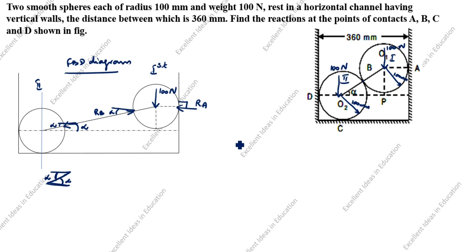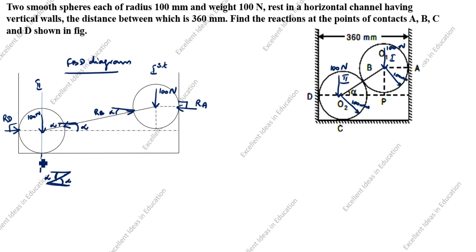For the second sphere FBD: the self-weight of 100 Newtons acts at the center downward. Reaction RD acts perpendicular to the right wall and towards the body. Reaction RC acts perpendicular to the bottom wall and towards the body. The reaction RB also acts on sphere two — equal and opposite to the RB on sphere one.